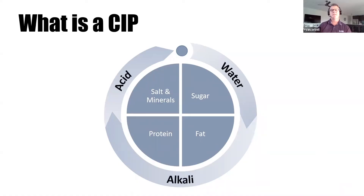So what is a CIP system? There are three stages. In the first step, we use mechanical force — here we use water to remove the build-up of residues through impacts and turbulence. In the chemical step, we use suitable chemicals to break up and remove any remaining residues through chemical action. And then we have the sterilization and sanitation step, which kills any remaining microorganisms and biofilm to an acceptable level.